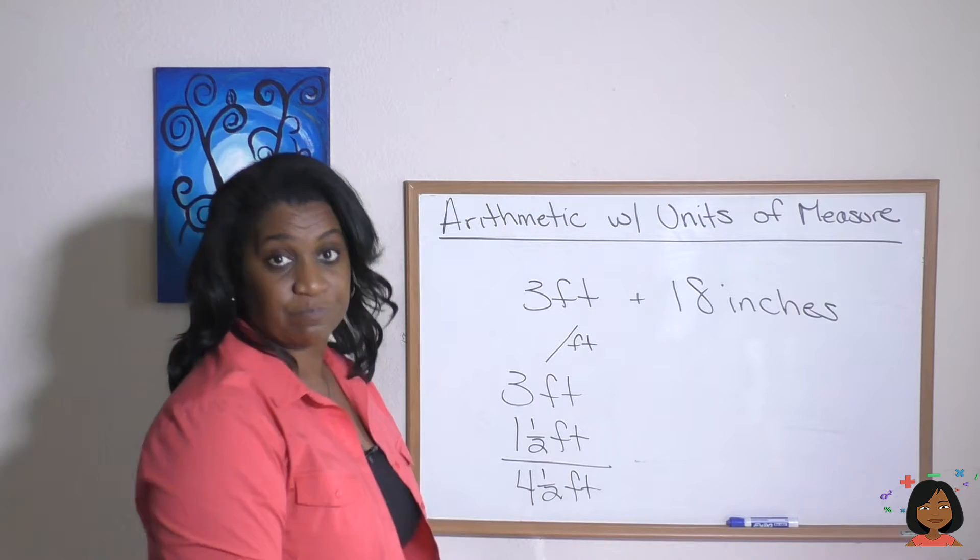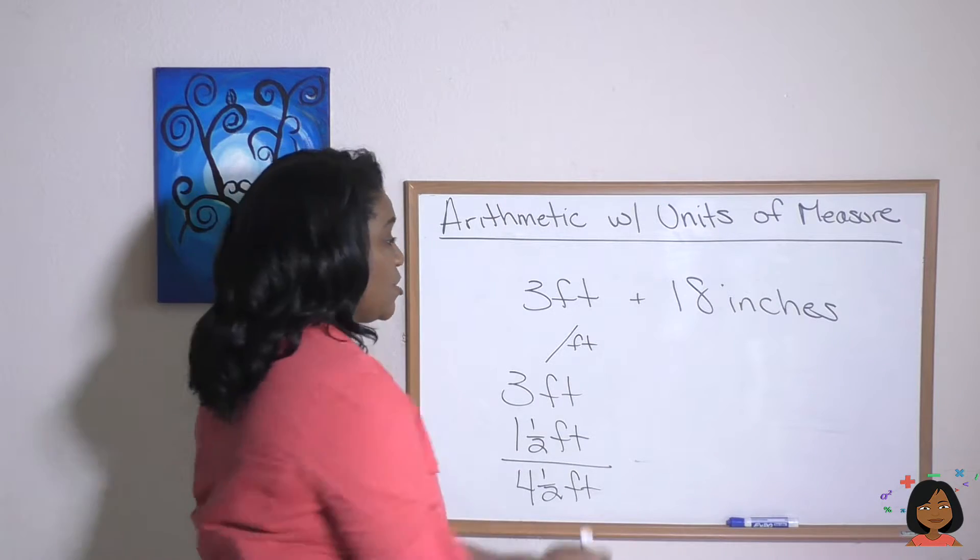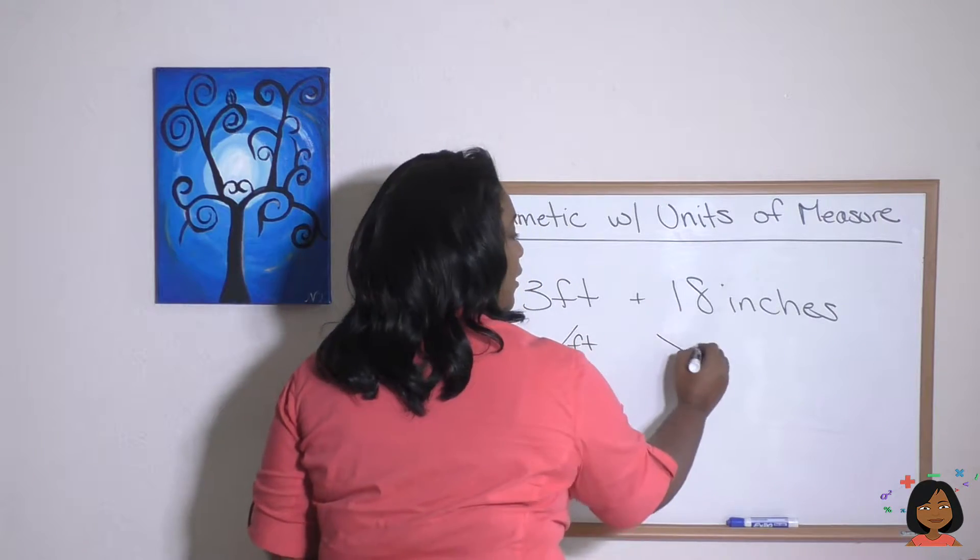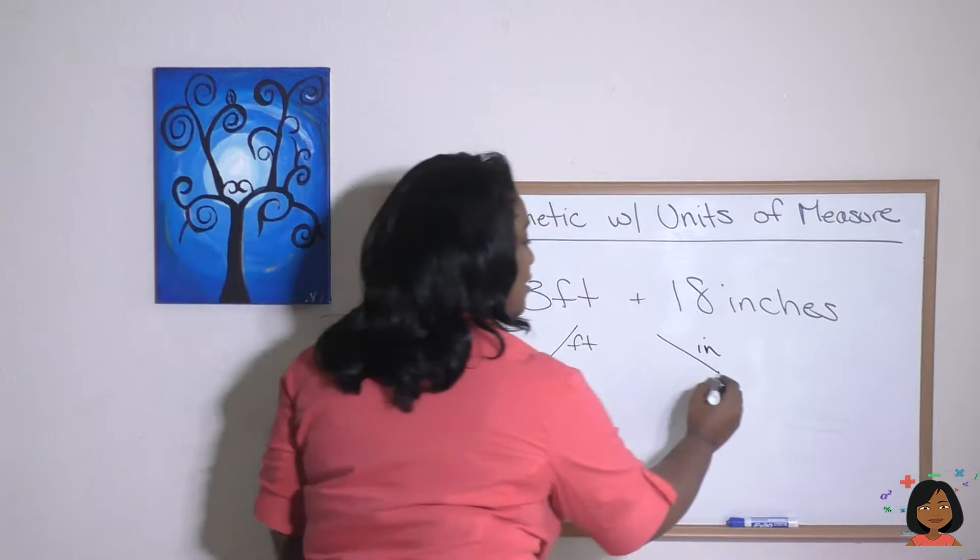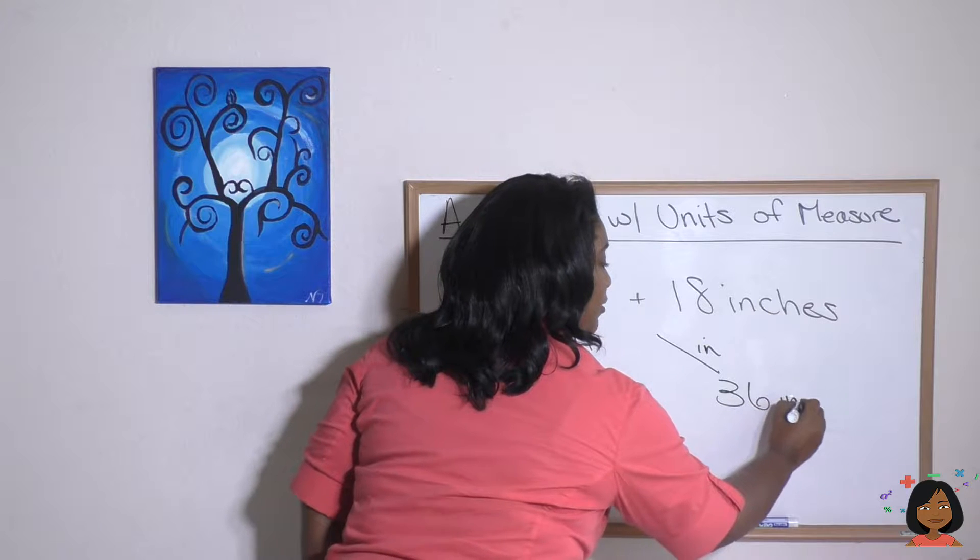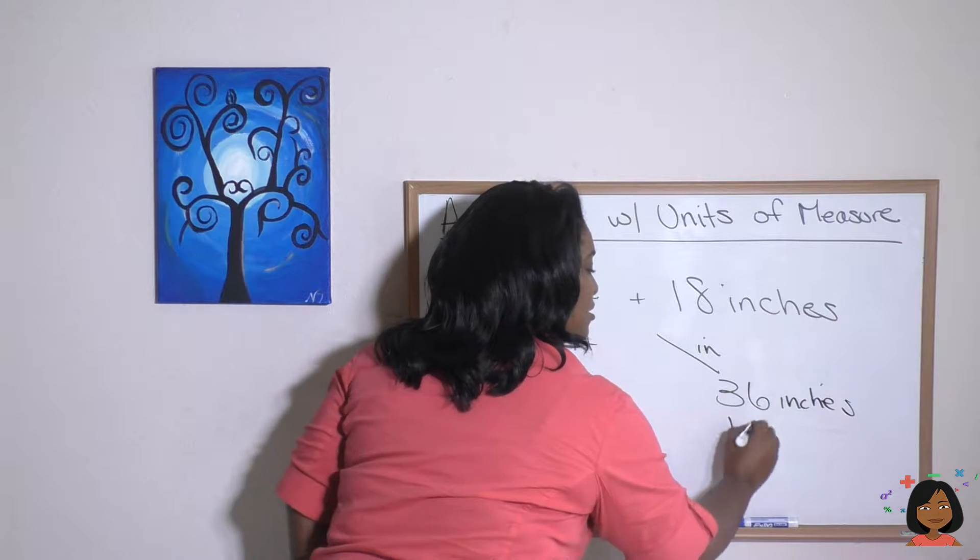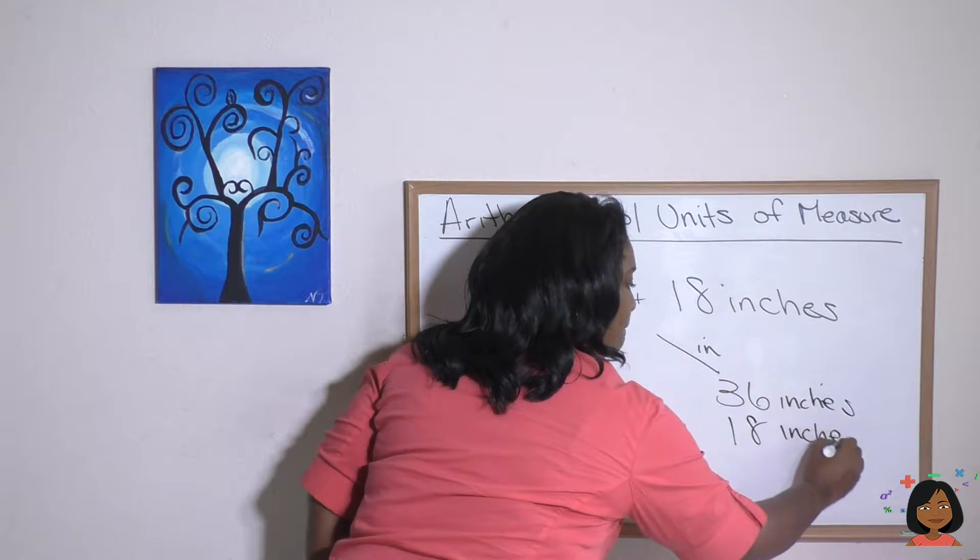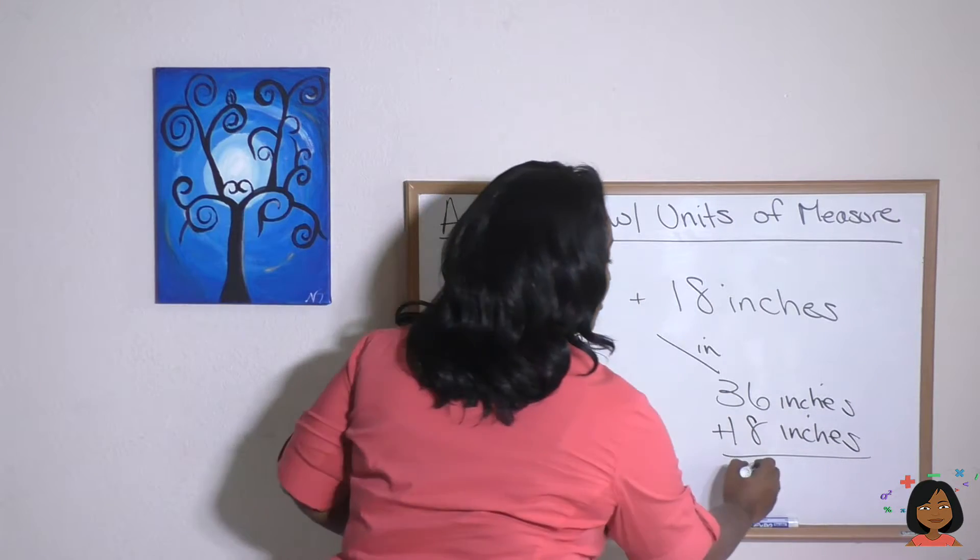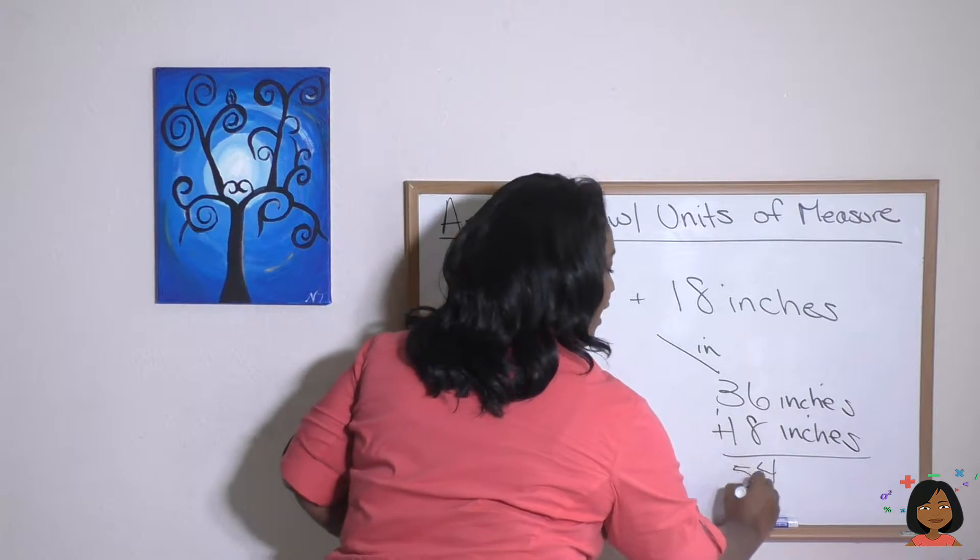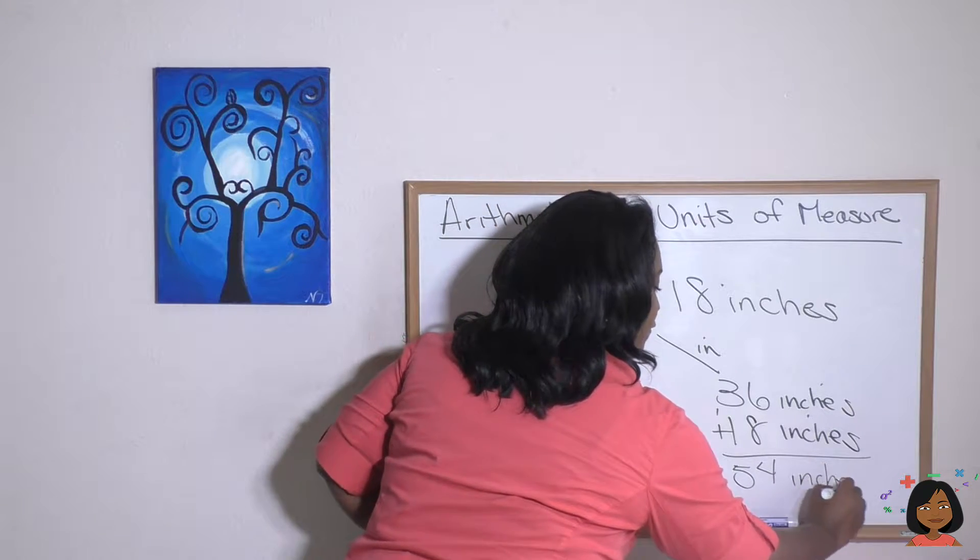That's converting to feet. We also could convert to inches. Here we go. Inches. We know that three feet is 36 inches plus our 18 inches. Okay. Let's add eight, six, 14, three, four, and five, 54 inches.